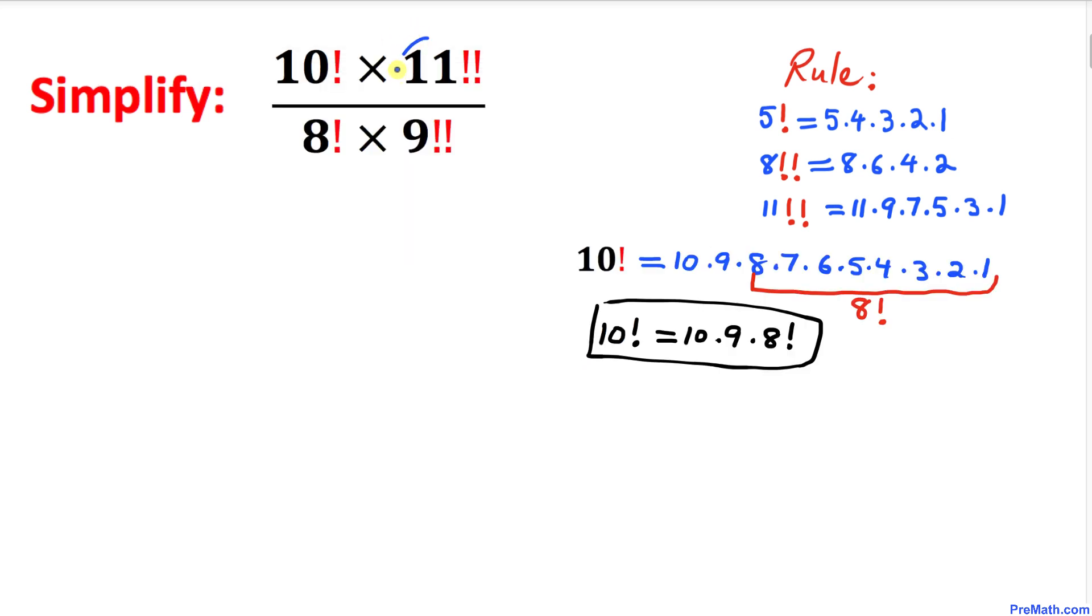Now let's focus on 11 double factorial. This could be written as 11 times 9 times 7 times 5, 3, and 1, because their common difference is 2. Now let's focus on 9 onward to 1, this could be written as 9 double factorial. So therefore I can write 11 double factorial as 11 times 9 double factorial. Just keep in your mind.